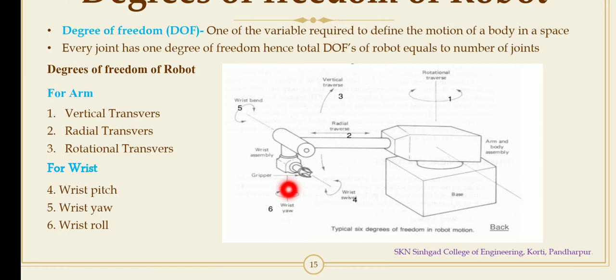The second one is the wrist yaw. It is the rotation of the wrist on the horizontal plane. This is the horizontal plane, this is the vertical axis. The wrist rotates about the vertical axis.